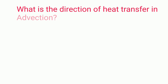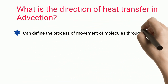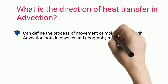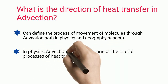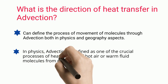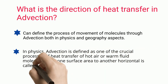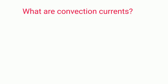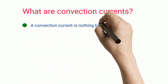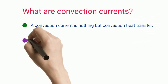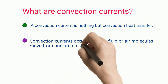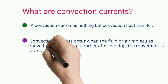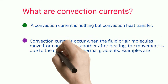What is the direction of heat transfer in advection? In physics, advection is defined as one of the crucial processes of heat transfer of hot air or warm fluid molecules from one surface area to another in a horizontal direction. What are convection currents? A convection current is convection heat transfer. Convection currents occur when fluid or air molecules move from one area to another after heating, due to the difference in thermal gradients. Examples are campfires, boiling of fluid, etc.